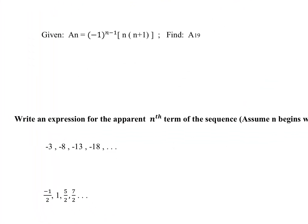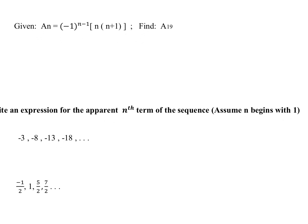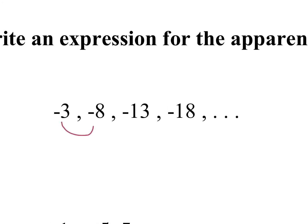Write an expression for the apparent nth term of the sequence. Assume n begins with 1. We want to find out what's going on from one number to the next. What do we have to do to get from negative 3 to negative 8? Minus 5. And from negative 8 to negative 13? Minus 5 and minus 5. So here we have an arithmetic sequence and we're subtracting 5 each time.